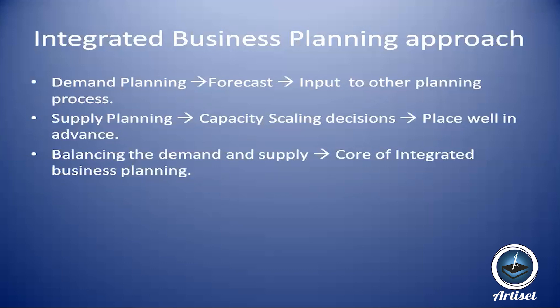For supply planners — in this hypothetical scenario — they don't care about the demand at all. They say: my capacity is 300, I'll manufacture only that. Both are separated processes. So when the next month's sales come, the sales guy expects 800 units but never communicated this to the supply planner, and the supply planner manufactured just 300 without asking the demand planner.